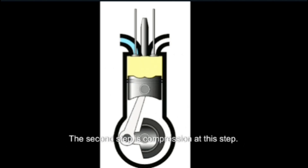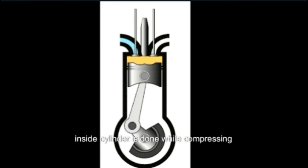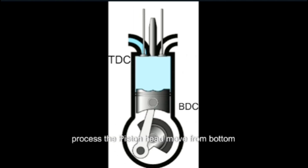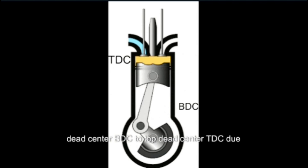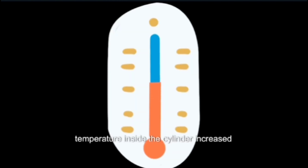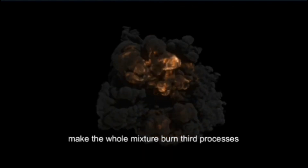The second step is compression. At this step, the compression of air filled inside the cylinder is done. During the compressing process, the piston head moves from Bottom Dead Center (BDC) to Top Dead Center (TDC), due to which air gets compressed and its volume is reduced. Because of that, the temperature inside the cylinder increases to the point where even a small spark can make the whole mixture burn.